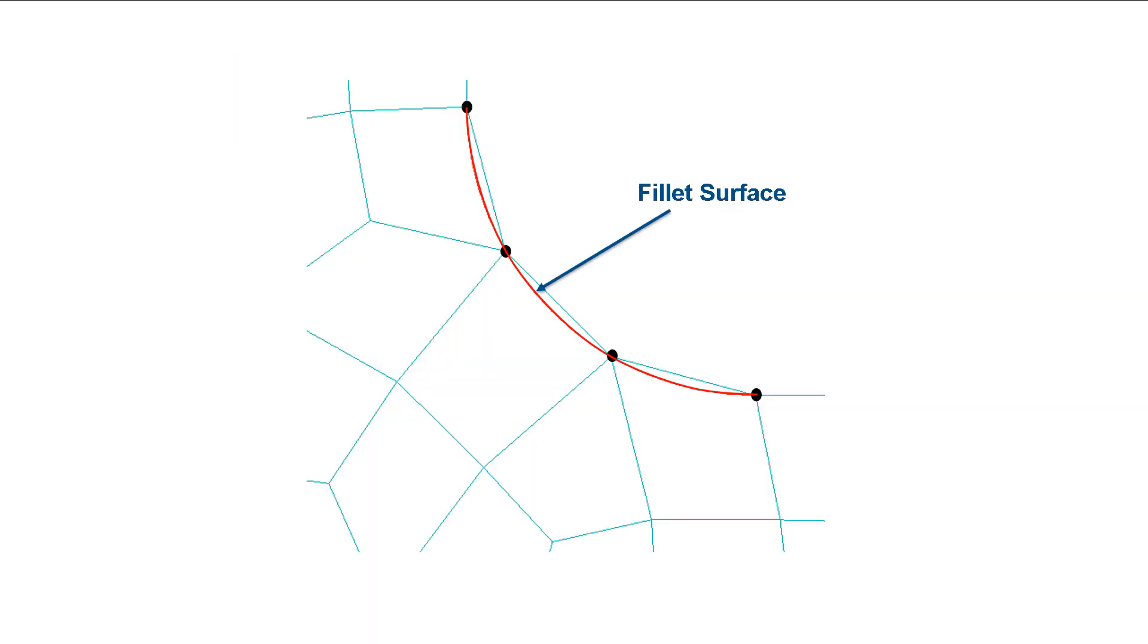Let's look at a fillet meshed with 8-noded elements. When viewed from the side, you can see that the elements do not follow the geometry's surface. This is known as discretization error. When this same fillet is meshed with 20-noded elements, the discretization error is significantly less.